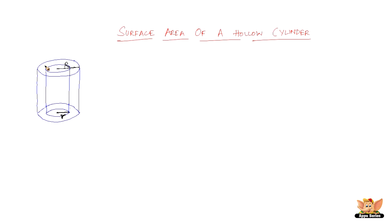Consider this diagram — it is an approximate representation of a hollow cylinder. Here we have the bigger circular base whose radius is capital R, and then we have the smaller circular base, which is the inner part of the hollow cylinder, whose radius is the smaller r.